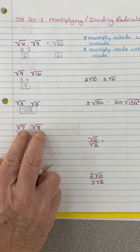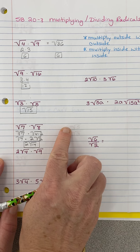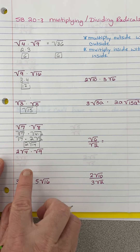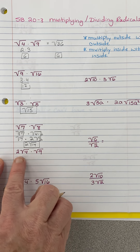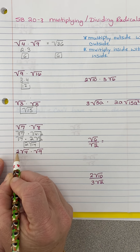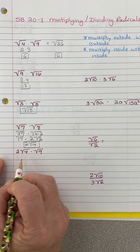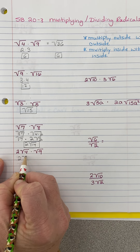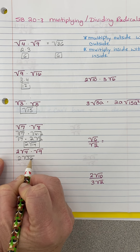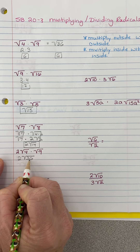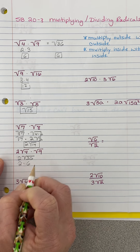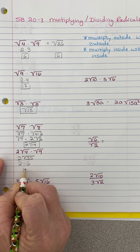You would have gotten the same answer if you multiplied first and then simplified. Let's do it that way on this one. If I multiply, this is a 1 right here. 2 times 1 is 2. 4 times 9 is 36 — that's a perfect square. So I have 2 times 6, and I get 12.